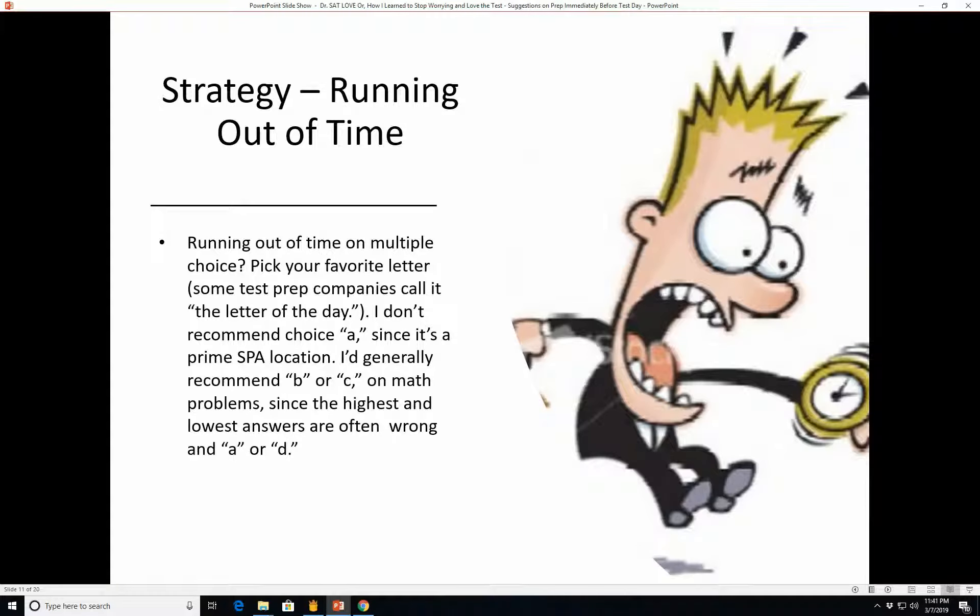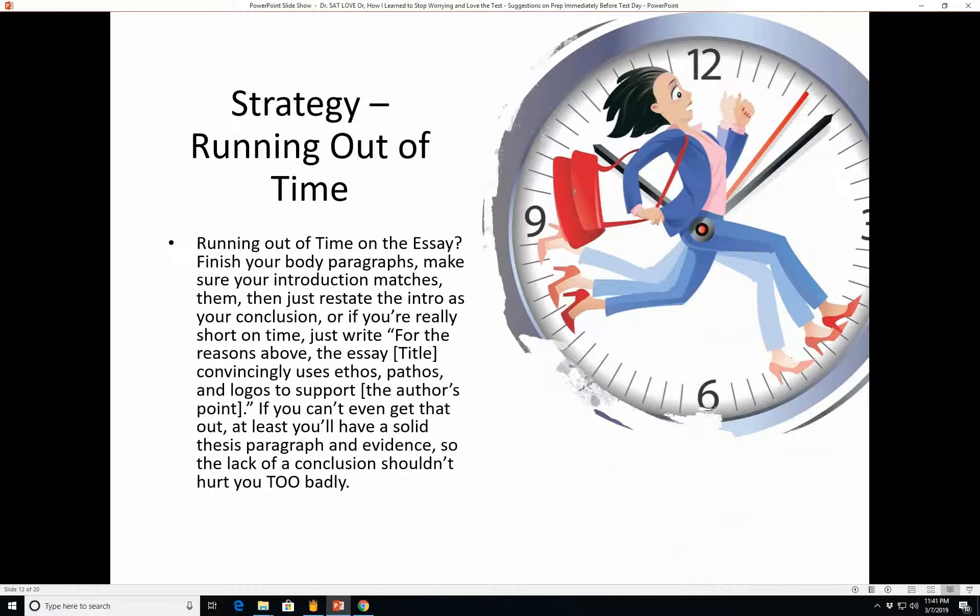Strategy, running out of time. Are you running out of time in multiple choice? Just pick your favorite letter. Some test prep companies call it the letter of the day. I don't recommend choice A for the reason I just said that it's a prime SPA sucker punch answer location. I generally recommend B or C on math problems since the highest and lowest answers are often wrong and usually their answer choice is A or D. So if you're running out of time on the essay, just finish your body paragraphs, make sure your introduction matches them, and then just restate the intro as your conclusion. Or if you're really short on time, just write something like, for the reasons above, the essay, the title of the essay they give you, convincingly uses ethos, pathos, and logos to support the author's point, which they tell you in the box at the end. So just do that. If you can't even get that out, at least you'll have a solid thesis paragraph and evidence so the lack of a conclusion won't hurt you that badly.